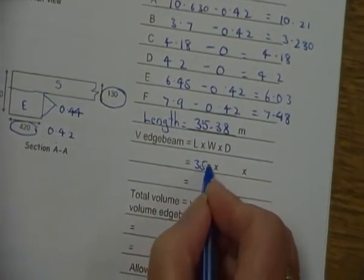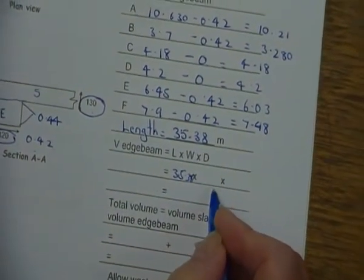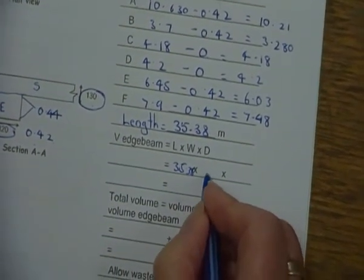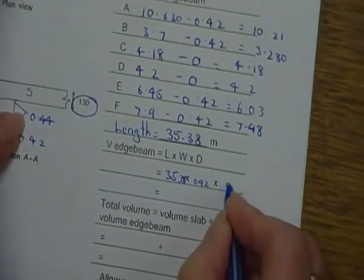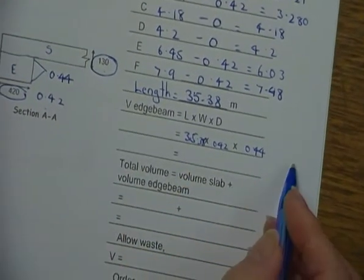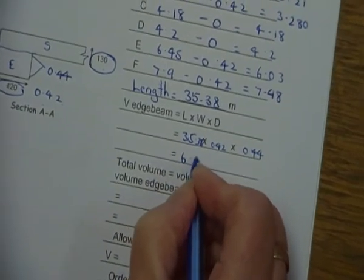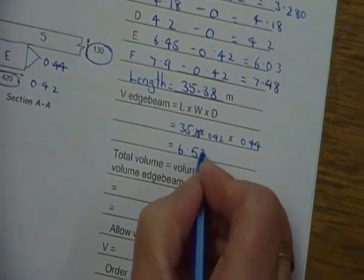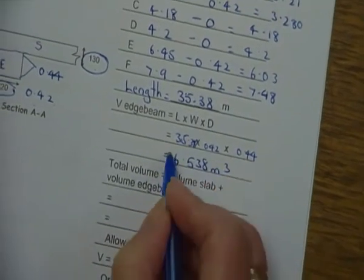So now our length is coming here at 35.38, times by my width of the footing of 0.42, times by 0.44, the depth. So we do the calculation on that and we get a figure of 6.538 meters cubed, and I want that answer.